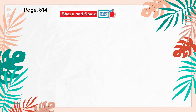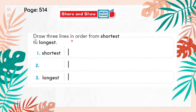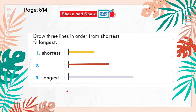On page 514, let's look at the share-and-show questions. Draw three lines in order from shortest to longest. When we have more than two lines, we use the terms shortest and longest. First, draw a short line — that is the shortest. Then draw a line longer than the shortest line. Finally, draw the longest line, which should be the biggest one. The lilac line represents the longest, and the lines clearly go from smallest to largest.